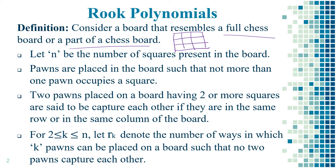Let n be the number of squares present in the board. Here, n is equal to 9 as the board contains 9 squares. Pawns are placed on the board such that not more than one pawn occupies a square — in a single square, we are not supposed to place two pawns. There is room for only one pawn.